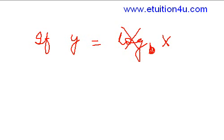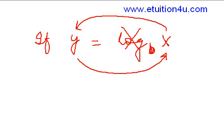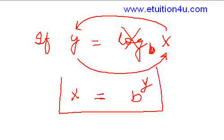Now, how do you get rid of this log? You can think of it as interchanging the positions of x and y. In place of y, you write an x. Get rid of the log. On the other side, it looks like b, and in place of x, you write a y. So, x is equal to b to the power y.